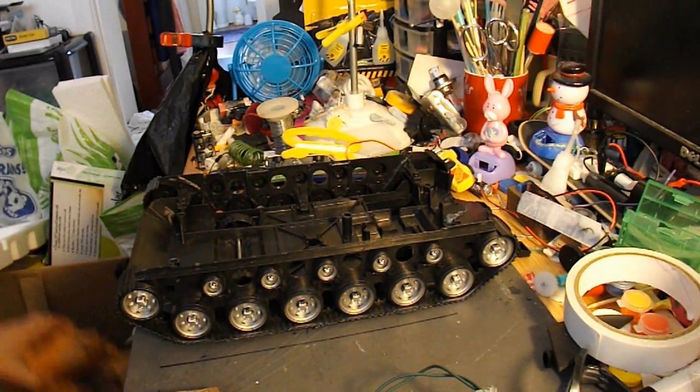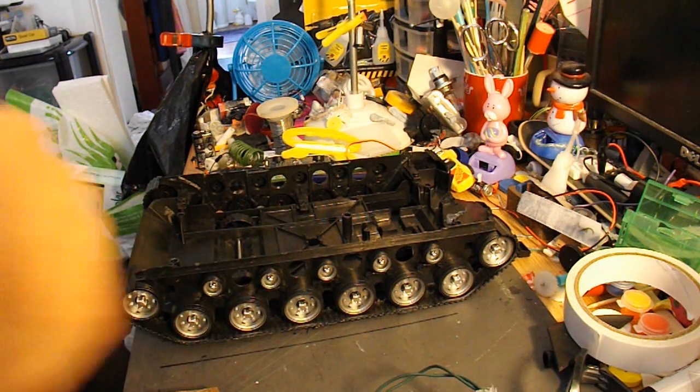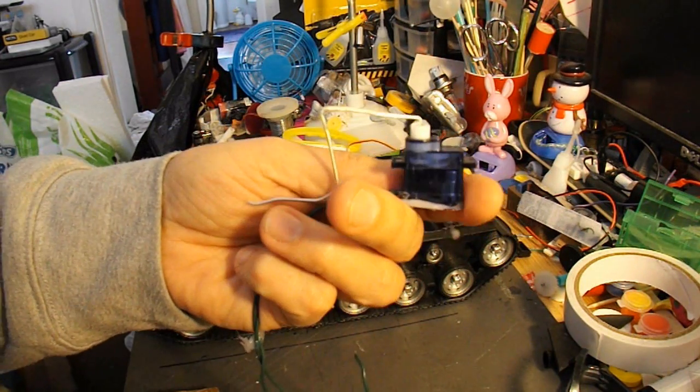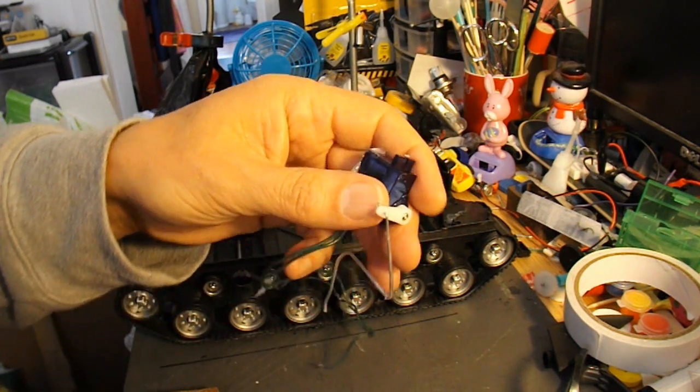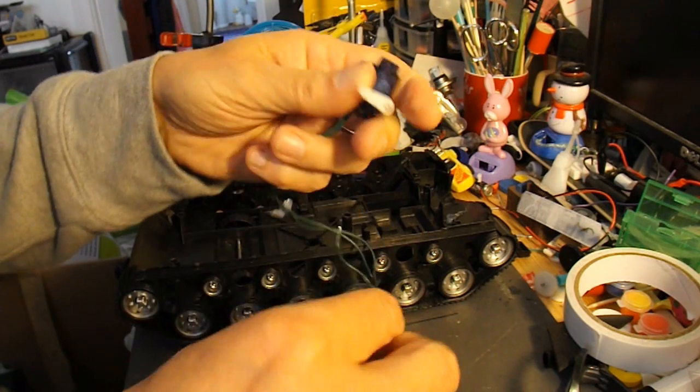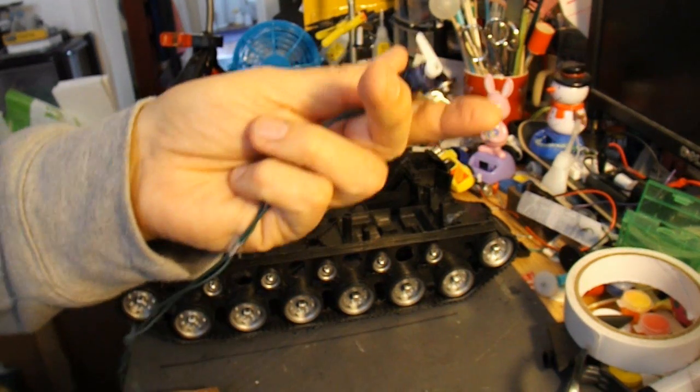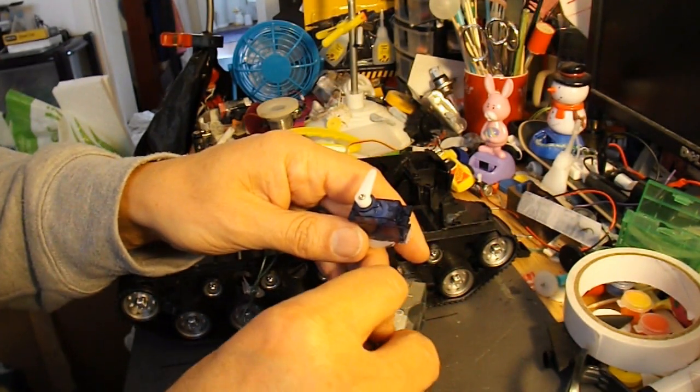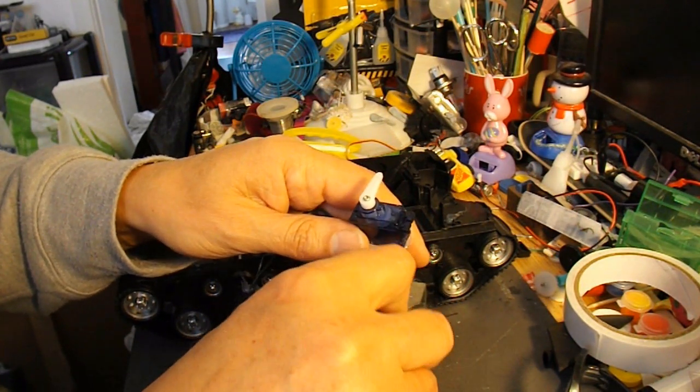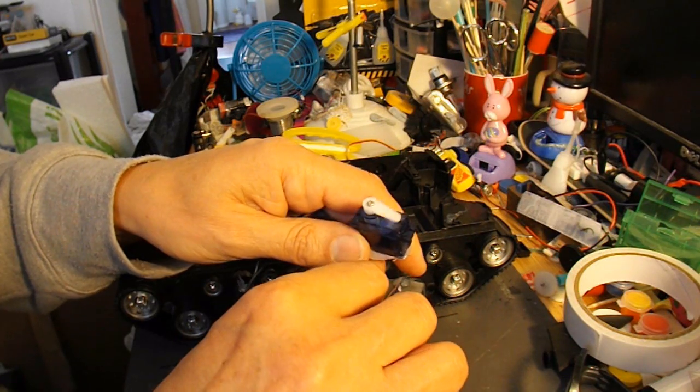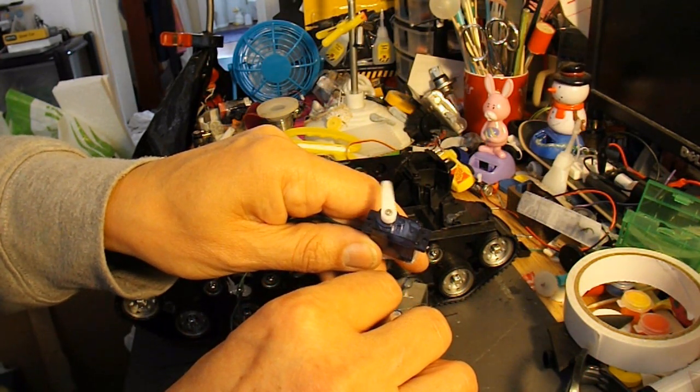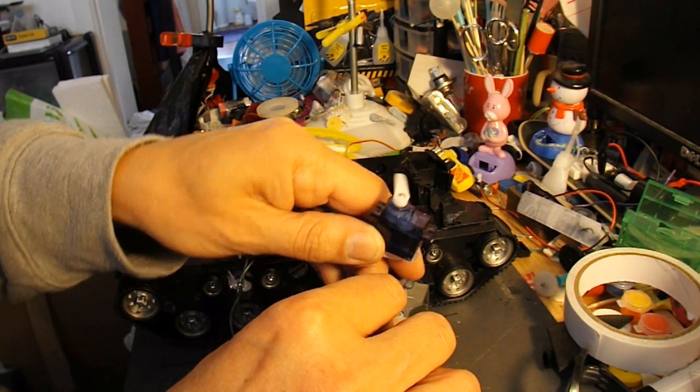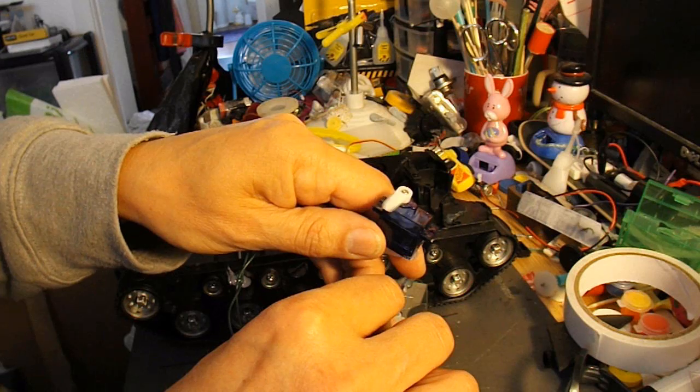Anyway, in a recent video, I've been modifying radio control servos for continuous rotation. There's my battery. I'll put a link into the video where I did it, because I showed you how to take the servo apart and modify it.